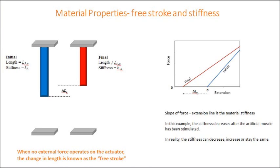The force extension curve is similar to the stress-strain curve, except we use force instead of stress and extension instead of strain. The initial force extension curve starts at zero and increases in the positive direction as we stretch the sample, represented in the blue line. The final force extension curve is that which occurs after the stimulus is applied to the artificial muscle. The offset along the x-axis represents the free stroke, in this case a contraction. The slope of the initial and final force extension curves represents the stiffness in the initial and final states. In this case the stiffness decreases after stimulation, but it can also increase or stay the same.